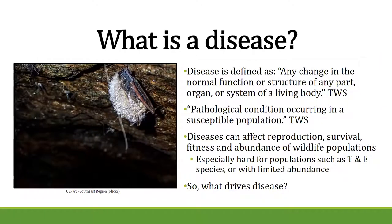According to the Wildlife Society, a disease is defined as any change in the normal function or structure of any part, organ, or system of a living body. Another definition is a pathological condition occurring in a susceptible population — something that happens when a population is not thriving, or there's an environmental change making that population more susceptible. We'll talk about why some populations are more susceptible to disease than others.